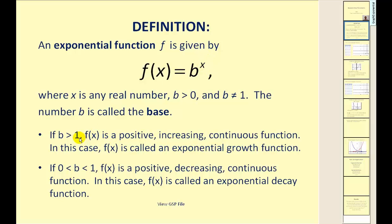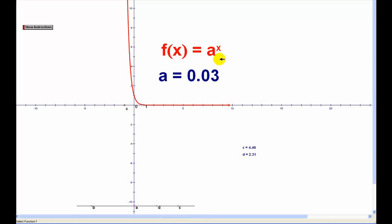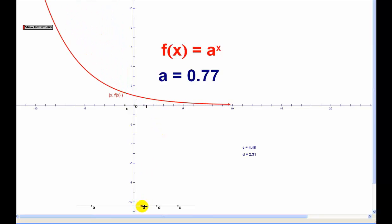If b is greater than one, f of x is a positive increasing continuous function. In this case, f of x is called an exponential growth function. If b is between zero and one, f of x is a positive decreasing continuous function. In this case, f of x is called an exponential decay function.